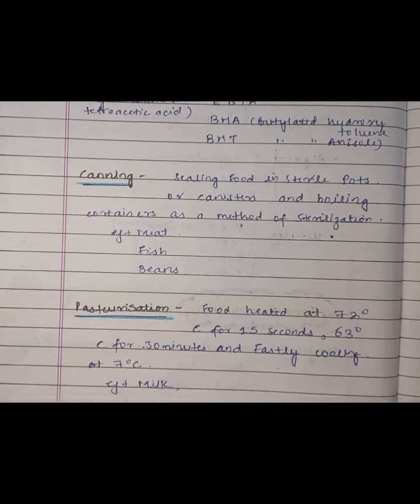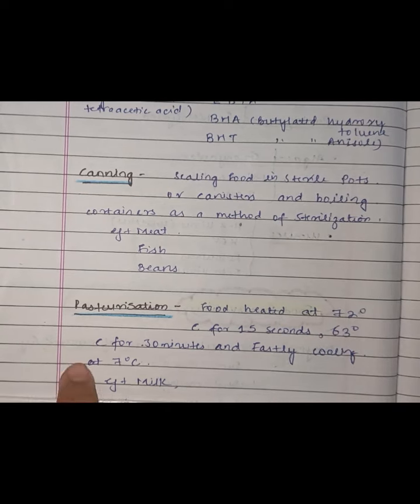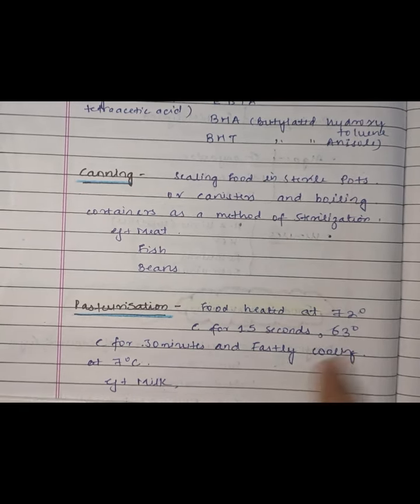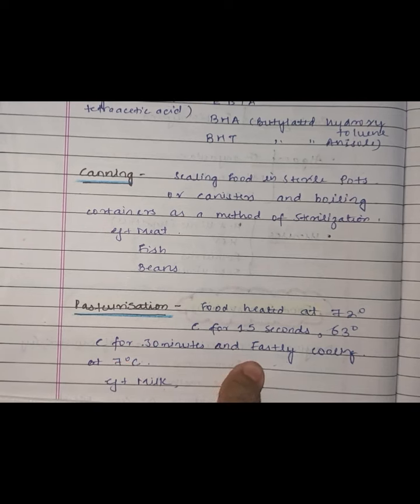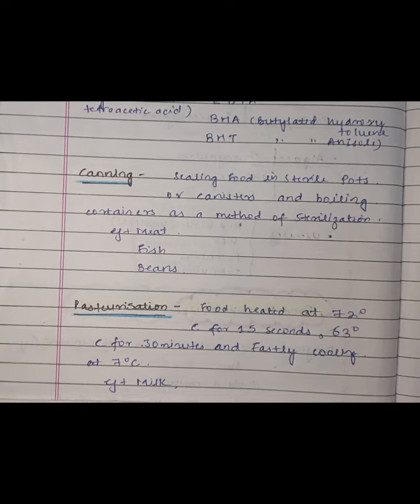Pasteurization, discovered by Louis Pasteur, involves heating food at 72 degrees Celsius for 15 seconds, or at a lower temperature for 30 minutes, followed by rapid cooling to 7 degrees Celsius. Pasteurization is mainly used for milk preservation.